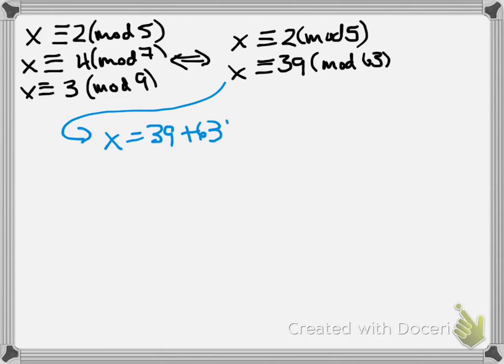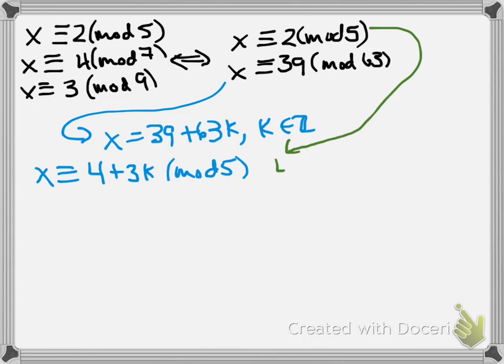Well, what's that in terms of equality? x is equal to 39 plus 63k, where k is an integer. Reducing that mod 5, we see that x has to be congruent to 4 plus 3k mod 5, but x is also congruent to 2 mod 5, so 4 plus 3k is congruent to 2 mod 5.